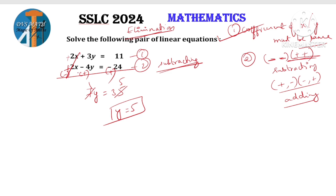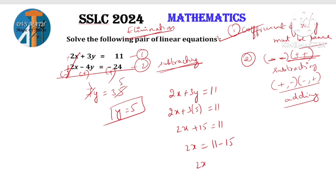To find x, take equation 1: 2x plus 3y equals 11. Substitute y = 5: 2x plus 3 into 5 equals 11. 3 fives are 15. So 2x plus 15 equals 11. 2x equals 11 minus 15. Smaller number minus bigger number gives minus 4. So x equals minus 2.